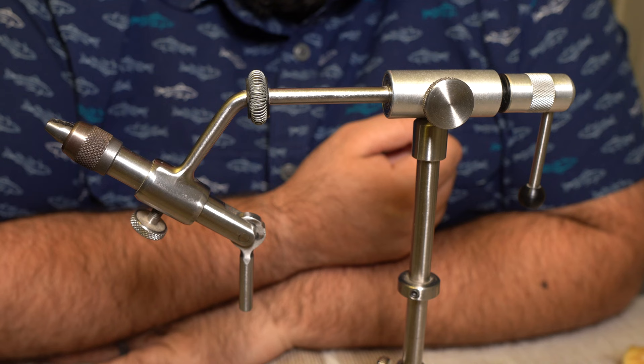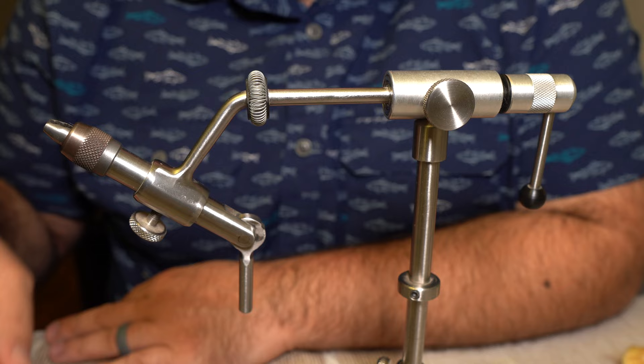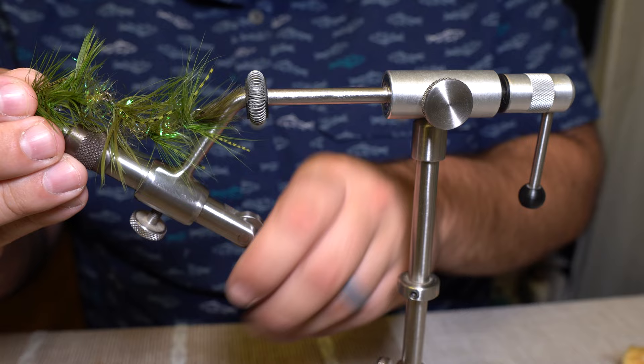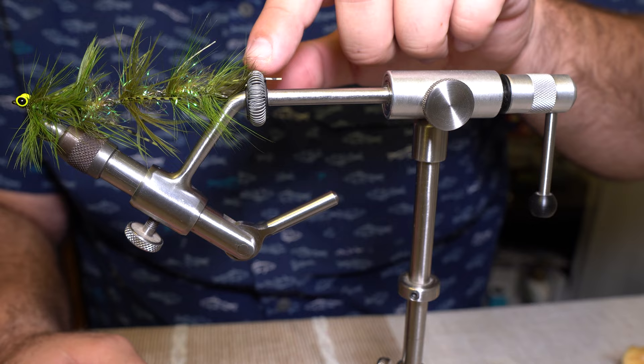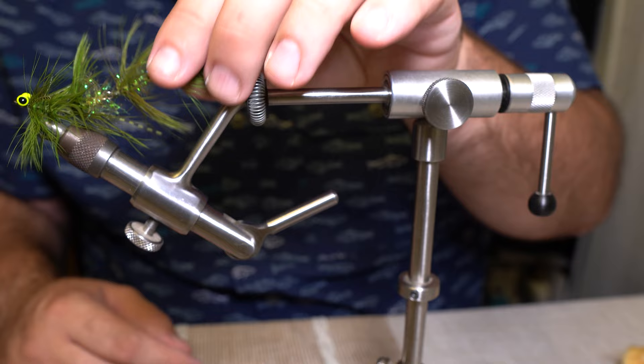My only other complaints, and honestly I don't know, this vise is older, and I'm not complaining, it works great. But I would like to have a material clip here. So if I'm tying something articulated and it's hanging off the back of the vise, sometimes this is too far away. So if I had a material clamp right here to stick that fly to, that would be nice.